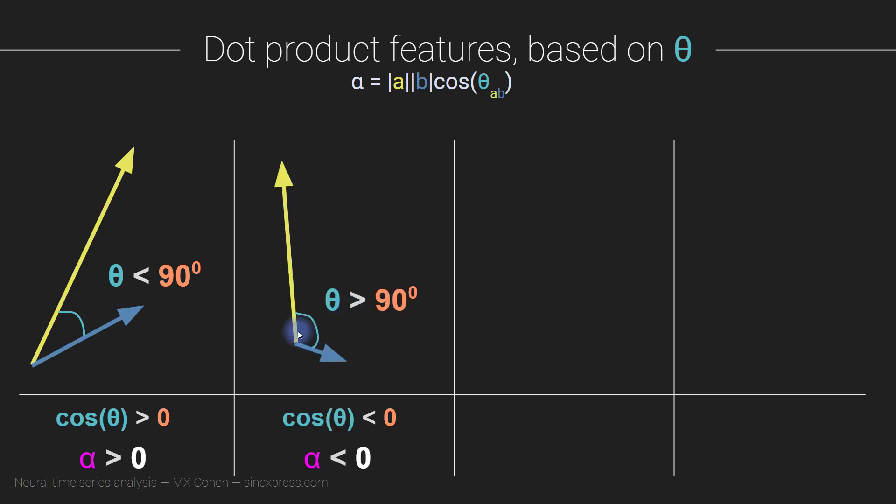Another possibility is that the two vectors meet at an obtuse angle, an angle that is greater than 90 degrees. We know from trigonometry that the cosine of an obtuse angle is less than zero. That means we are definitely going to get a negative sign, a negative value dot product, a dot product that is less than zero if the two vectors meet at an angle greater than 90 degrees.